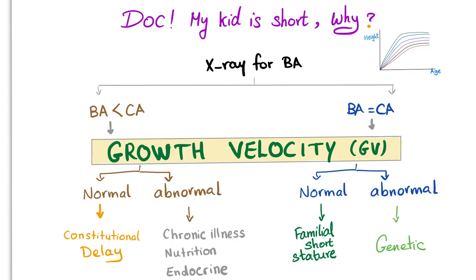Let's review the algorithm discussed in the previous video. When a parent asks why their kid is short, first we x-ray to get the bone age, then we compare the bone age to the actual chronological age. If the bone age is less than the chronological age — for example, chronological age is eight and bone age is six — we look at the growth velocity from the curve. If the slope is normal, that's constitutional delay. If it's abnormal, that could be chronic illness, nutrition issues, or endocrine problems such as growth hormone deficiency.